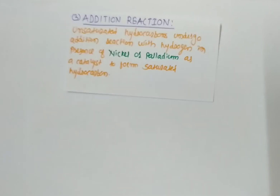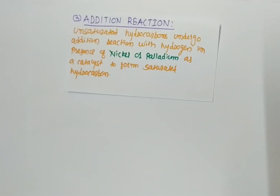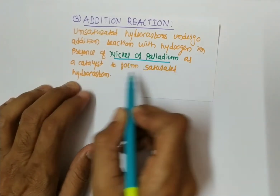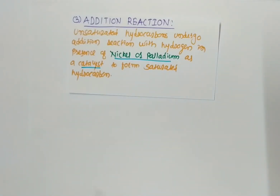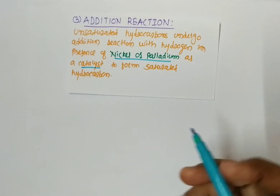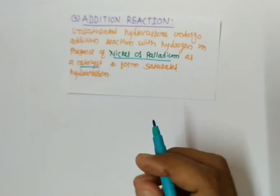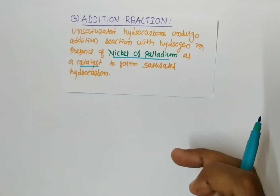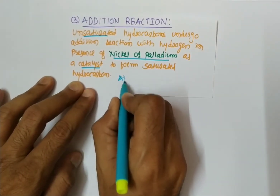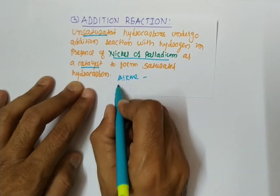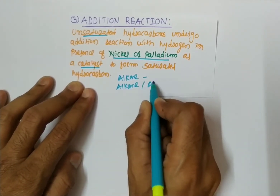The third reaction is the addition reaction. Unsaturated hydrocarbons undergo addition reaction with hydrogen in the presence of nickel or palladium as a catalyst. A catalyst is a substance which does not take part in the reaction but whose presence increases the rate of reaction. Unsaturated hydrocarbons — as discussed in the previous video — include alkenes and alkynes, while alkanes are saturated hydrocarbons.